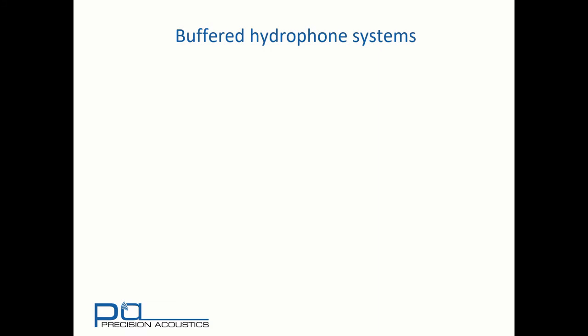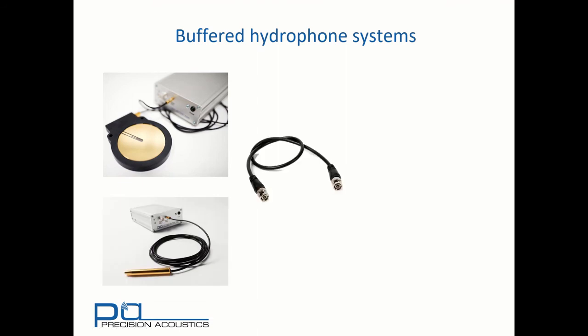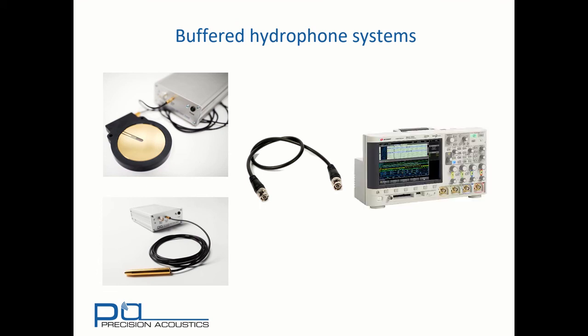So let's have a look at how all of this fits together when we're making hydrophone measurements. If we have a membrane or needle hydrophone which incorporates a preamplifier, then these have 50 ohm outputs. Because they're buffered, we can use a 50 ohm cable to connect to our oscilloscope, which must also always use 50 ohm impedance.